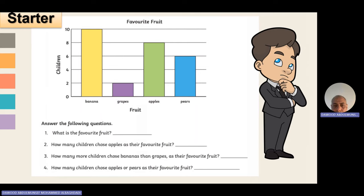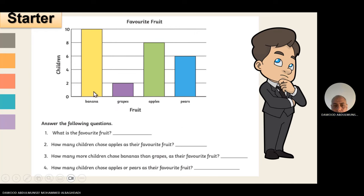Here is a starter example showing how to deal with chart questions. We have a bar chart about children and their favorite fruits. To answer the questions: the favorite fruit is bananas; eight students choose apples as their favorite fruit; bananas versus grapes — bananas are higher by eight students; and children who choose apples or pears as their favorite fruit will be eight plus six, which equals fourteen.